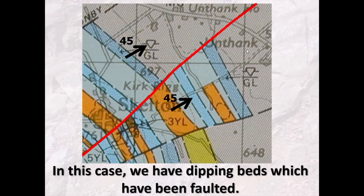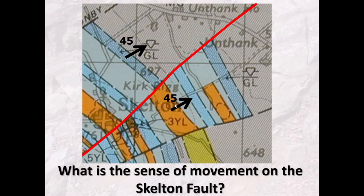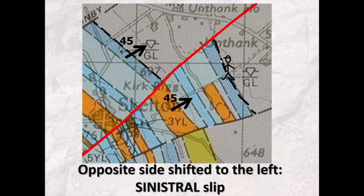In this example, along the Skeleton Fault, we have dipping beds dipping towards the northeast. Whether you're stood here looking this way or stood here looking this way across the Skeleton Fault, it would look like the beds have been shifted to the left. So the sense of movement along the Skeleton Fault is sinistral.